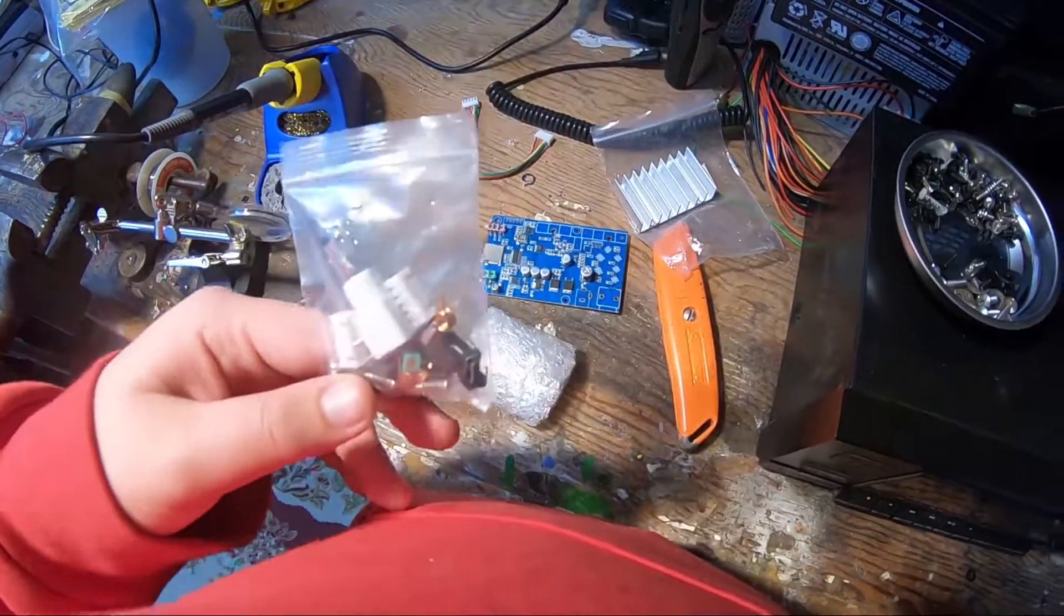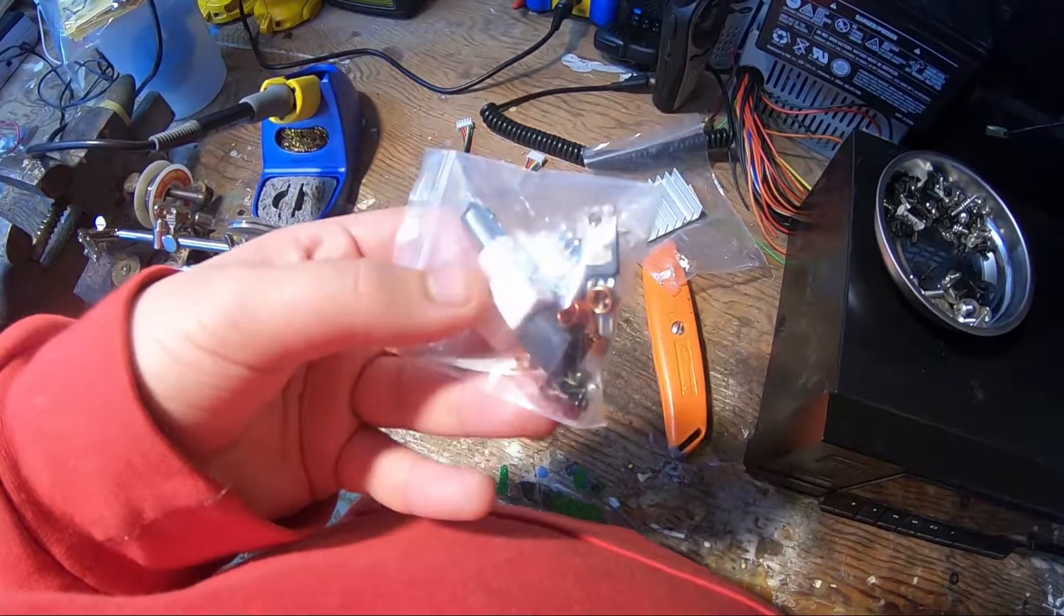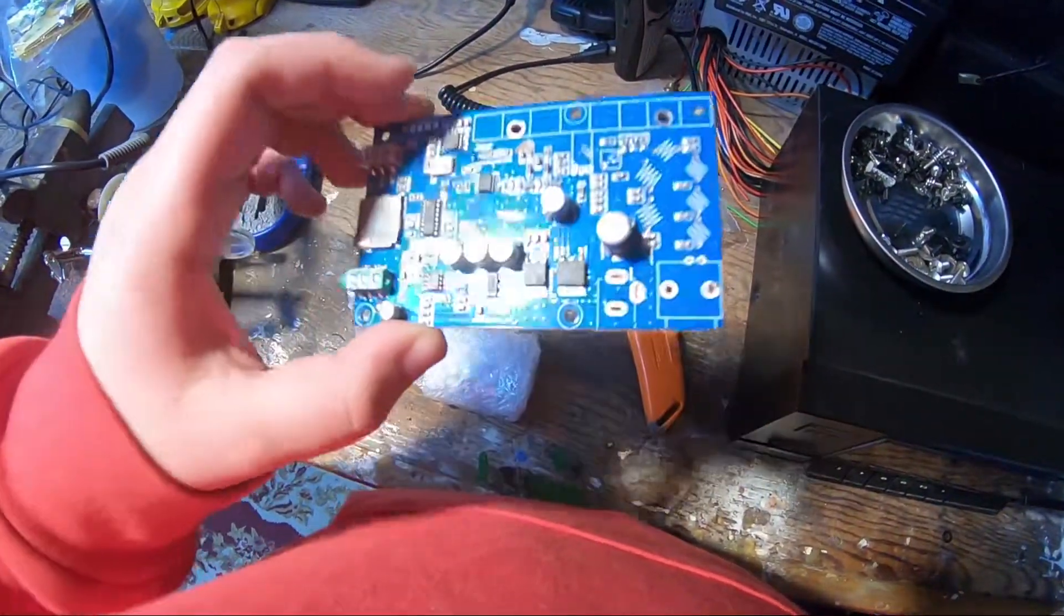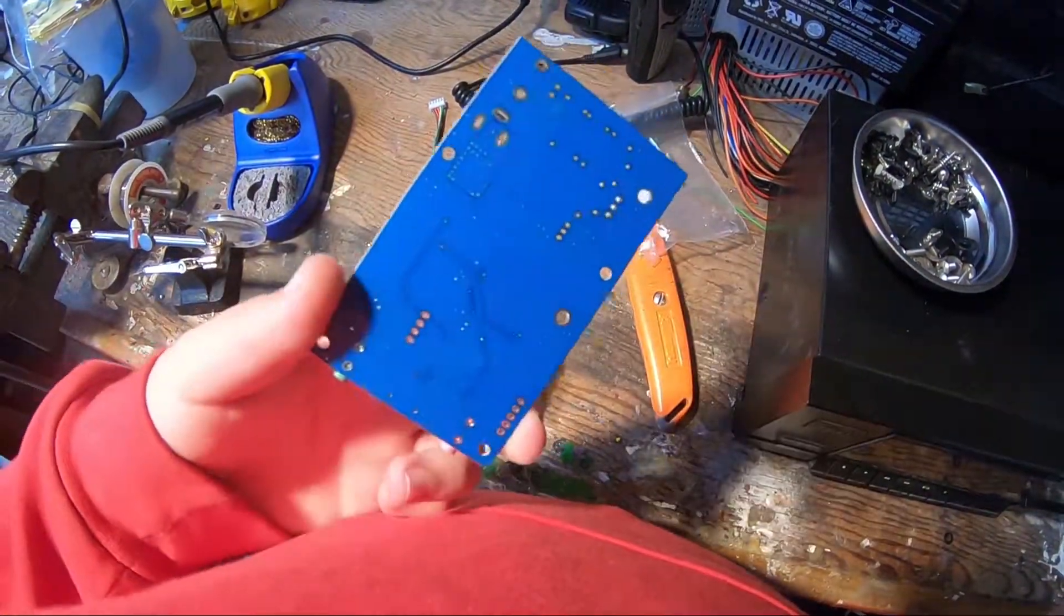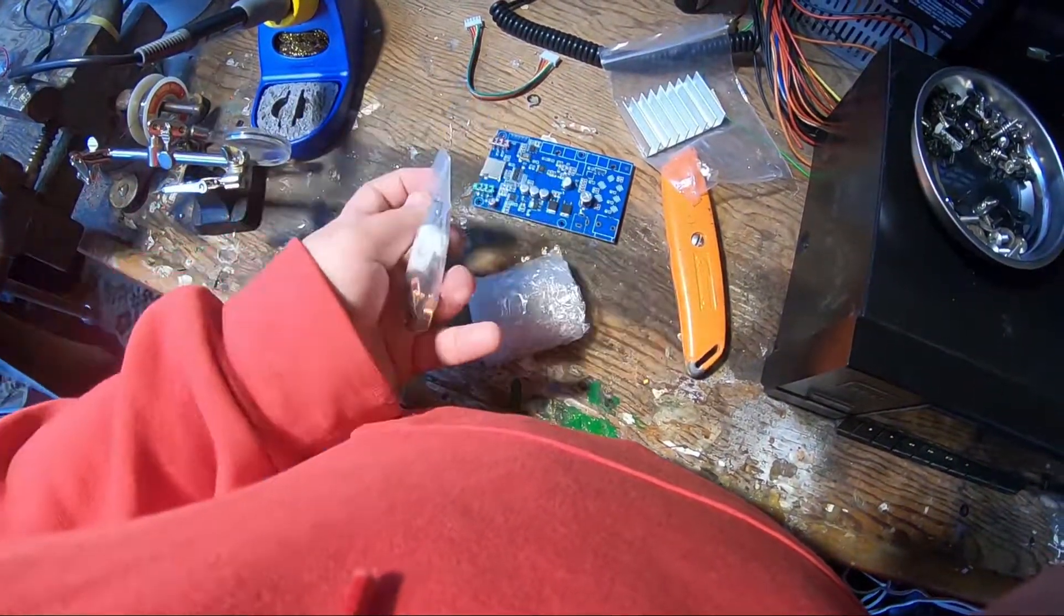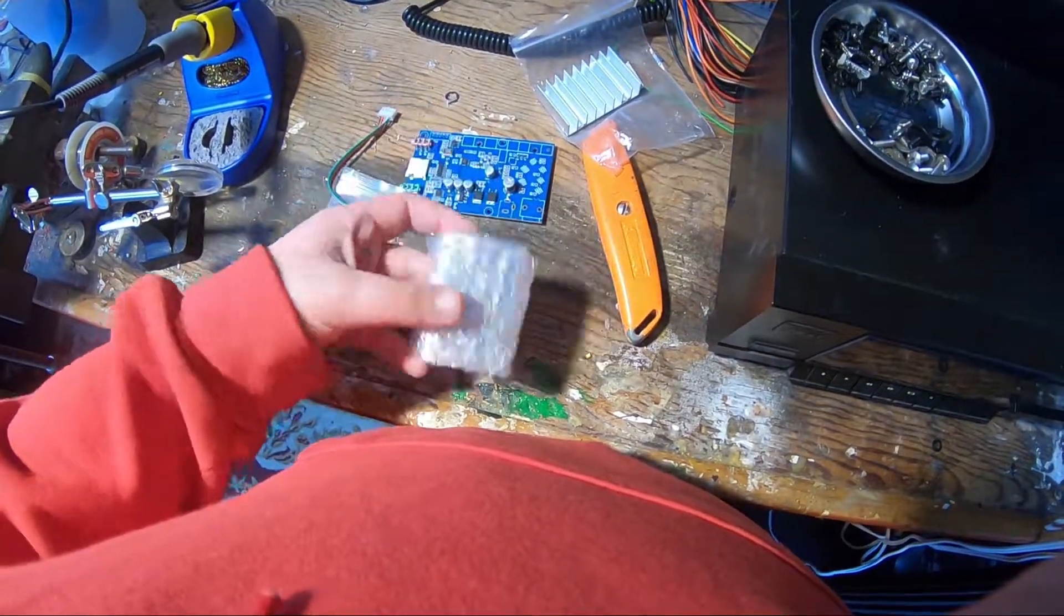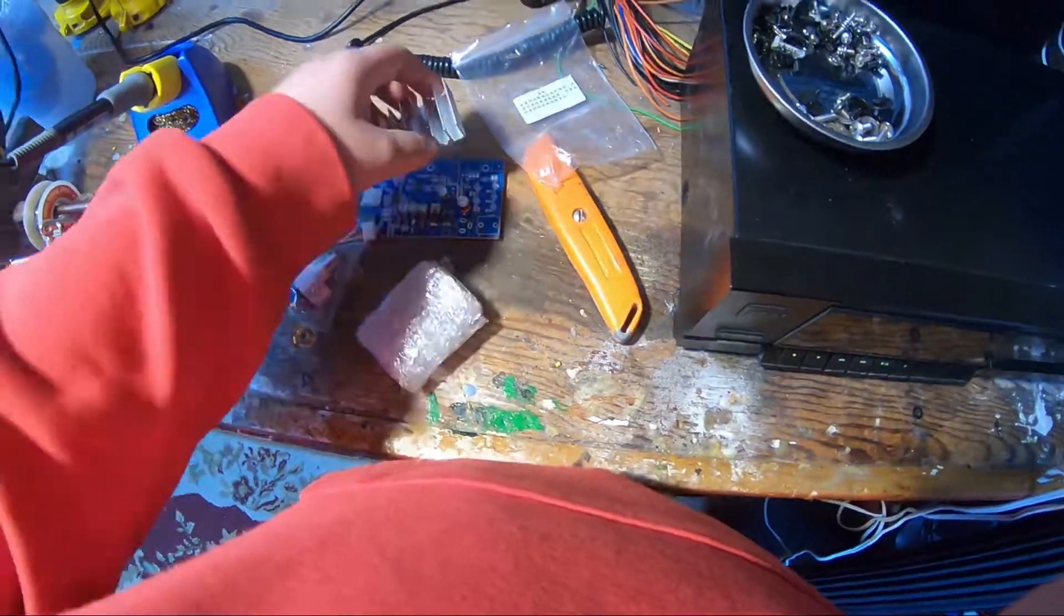Here's the kit parts. The surface mount ones already came soldered, but you gotta solder these, which is easy. Came with a cable and comes with a screen and a heat sink. Let's open this up.